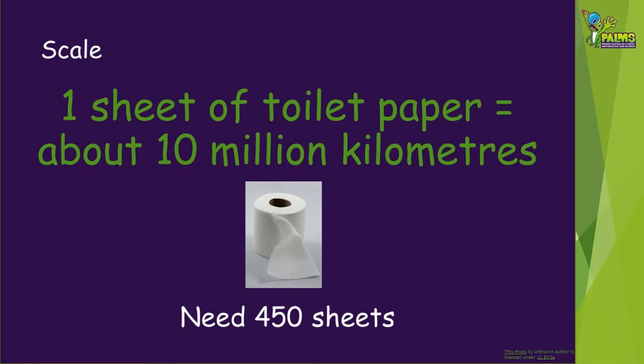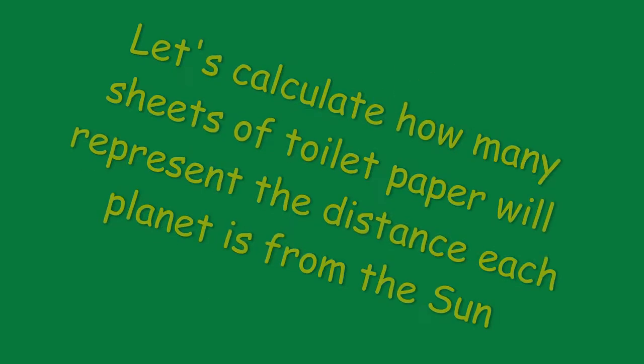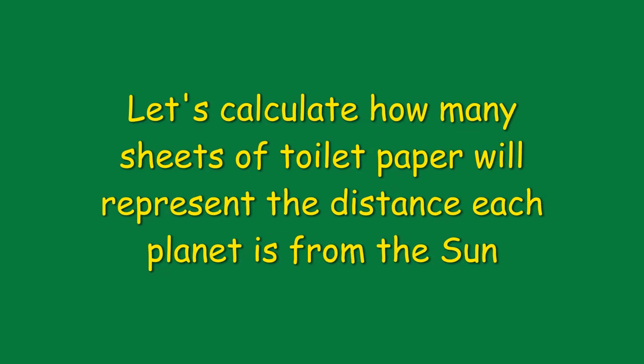This means you'll need to use two or more toilet rolls depending on how many sheets they have — it usually has this information on the packet. We'll show you the calculations to work out how many sheets of toilet paper will represent each planet's distance from the sun. We'll only show each planet briefly, but you can pause the video if you'd like to write the details down. Perhaps try doing the calculations yourself after we've shown you the first one. Remember that each of these numbers are starting from the sun, which will be at the start of the toilet roll.